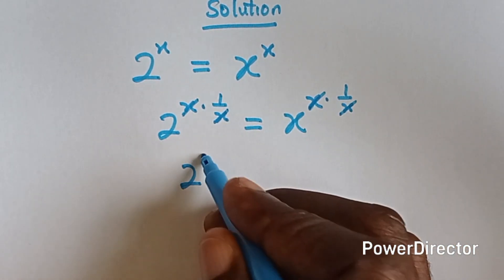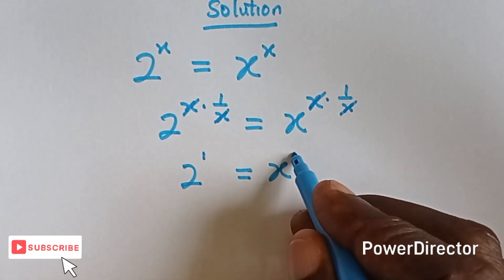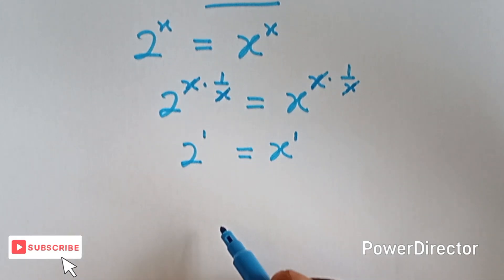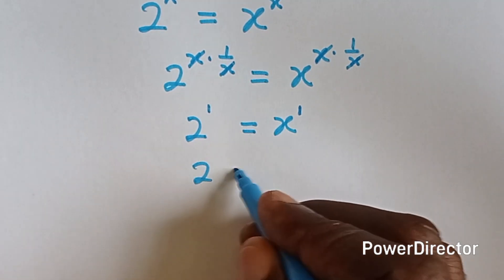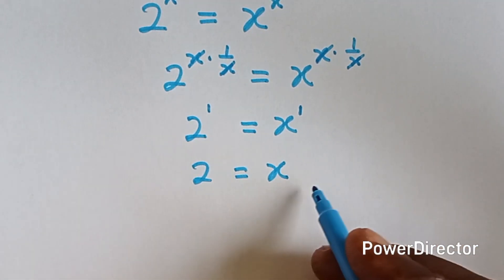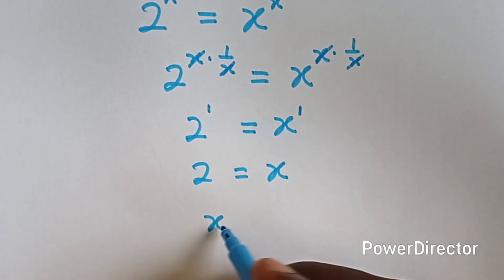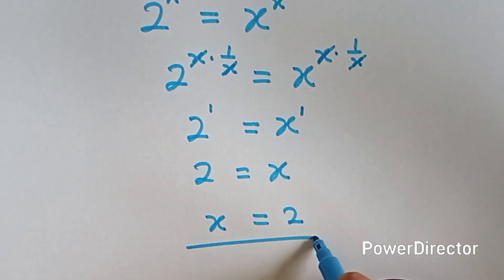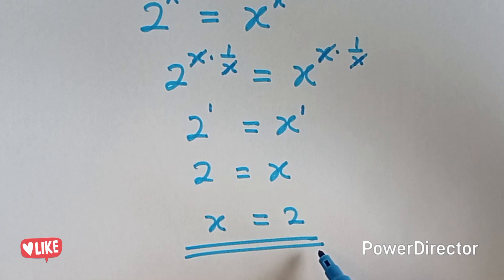So we have 2 raised to power 1 equals to x raised to power 1. All right, so what is 2 raised to power 1? 2 raised to power 1 is 2, x raised to power 1 is x, and then we can have our answer which says that x equals to 2.